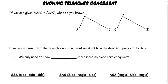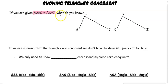Hello, today we're going to be learning about how to prove whether or not triangles are congruent. We're going to start by looking back at what we do know about congruent triangles. If I give you a statement that triangle ABC is congruent to XYZ, we know that all corresponding parts are congruent — we look at the order of the pieces.